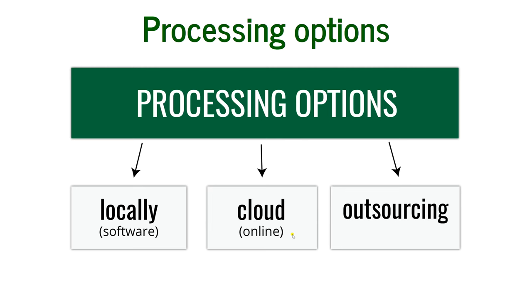When something goes wrong in the processing outputs, you don't know where it came from. There is also the option of outsourcing — for example, hiring a professional company. Here in Raleigh we have multiple companies who would do it for you, and in that case you have more input and more control over the process.